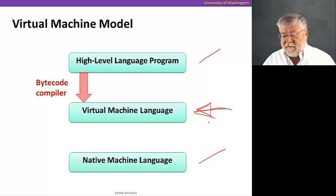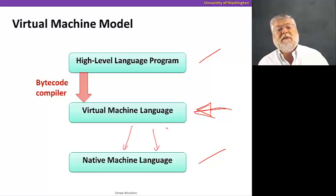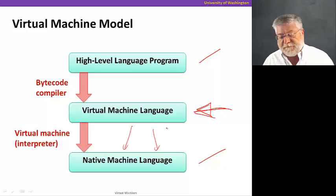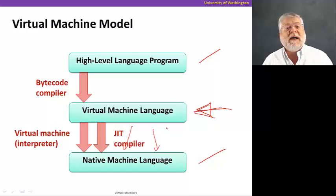From there we can go to different CPUs, for example, and easily retarget our code. That can be done, we can do that using a virtual machine interpreter or a JIT compiler. JIT, remember, stands for just in time.